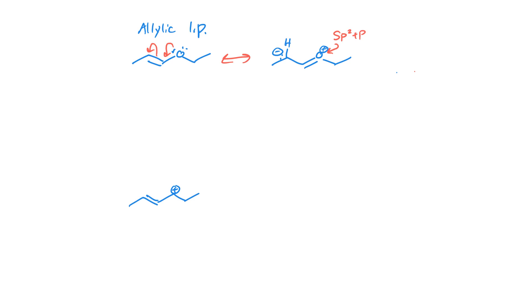You might say, well it's sp3, it's got two lone pairs and two bonds. Well if that lone pair can undergo resonance, it has to be in a p orbital. So this oxygen here is also sp2 plus p. Therefore this lone pair is in a p orbital because it can undergo resonance.